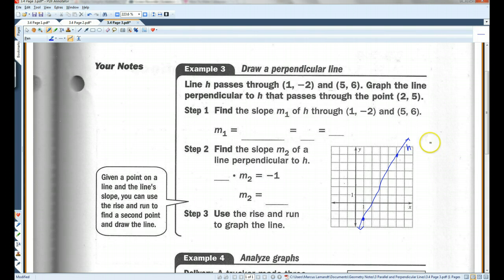Graph the line perpendicular to H that passes through point two, five. Two, five is here. So, I need to draw a line perpendicular through that point. First step, I need to find the slope of this line. So, I'm going to use my y's. Six minus negative two over five minus one. These become positive. Six plus two is eight. Five minus one is four. Eight divided by four is two.